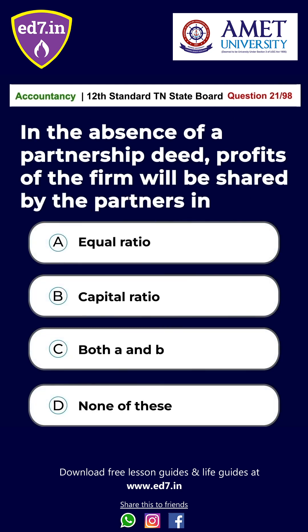Question No. 21: In the absence of a partnership deed, profits of a firm will be shared by the partners in — Option A: Equal Ratio, Option B: Capital Ratio, Option C: Both A and B, Option D: None of these. The answer is Option A, Equal Ratio.